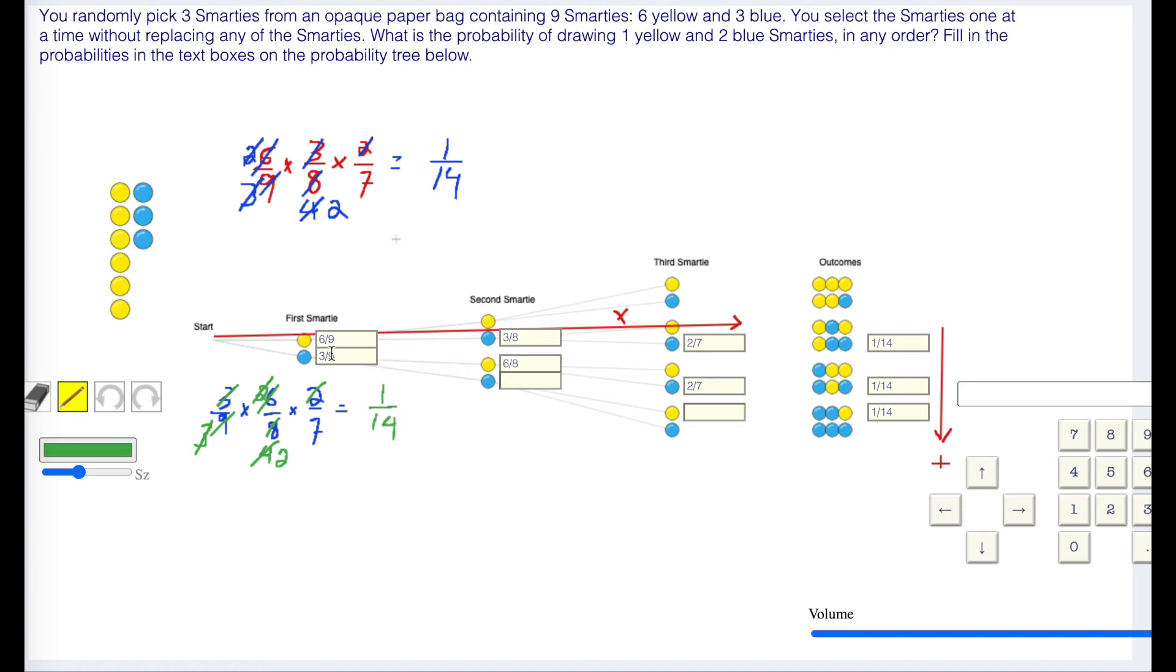The last one, 3 out of 9 are blue. We've taken a blue so you only have 2 left. So 2 out of 8 which can reduce to 1/4. I tend not to reduce here just so I can see the 9, 8, 7 pattern. Yellows. I have 6 out of 7 are yellow.